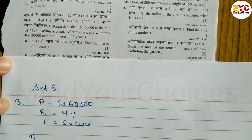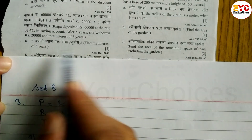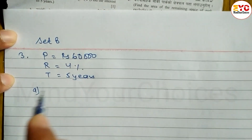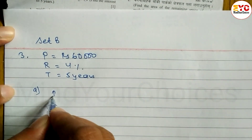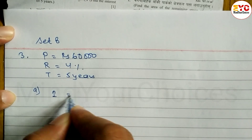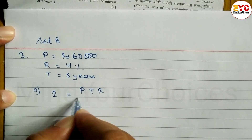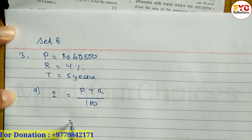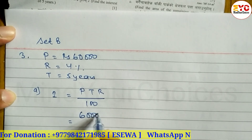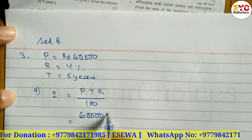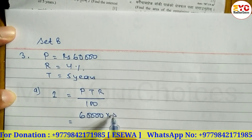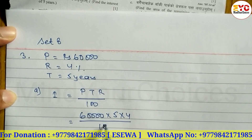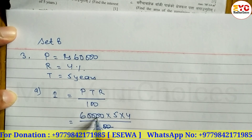Part A: Find the interest of 5 years. The interest formula is PTR divided by 100. The value of P is 60,000, value of T is 5 years, and value of R is 4, divided by 100.